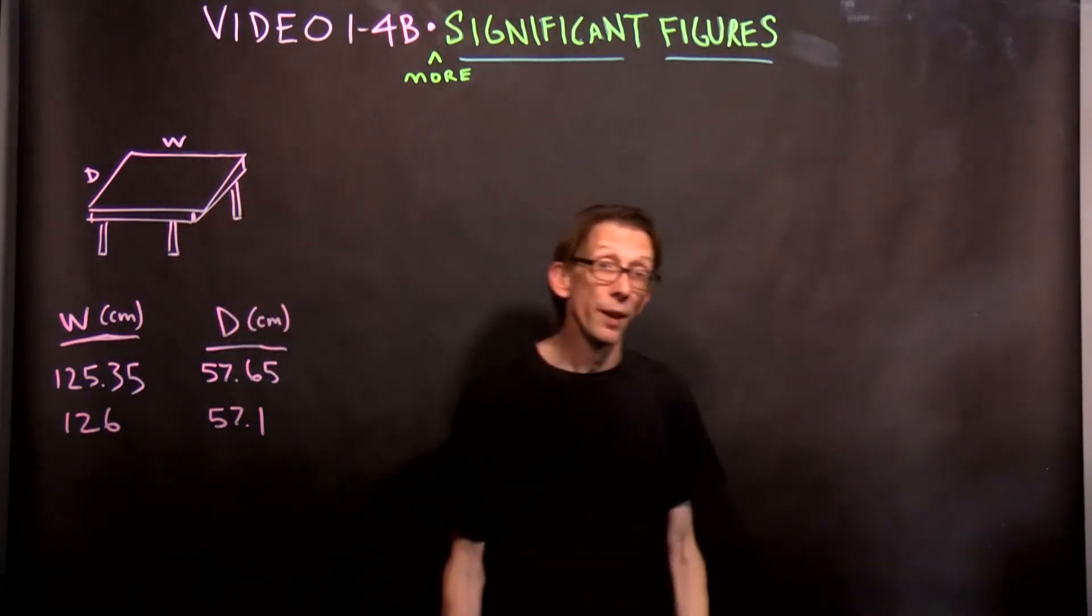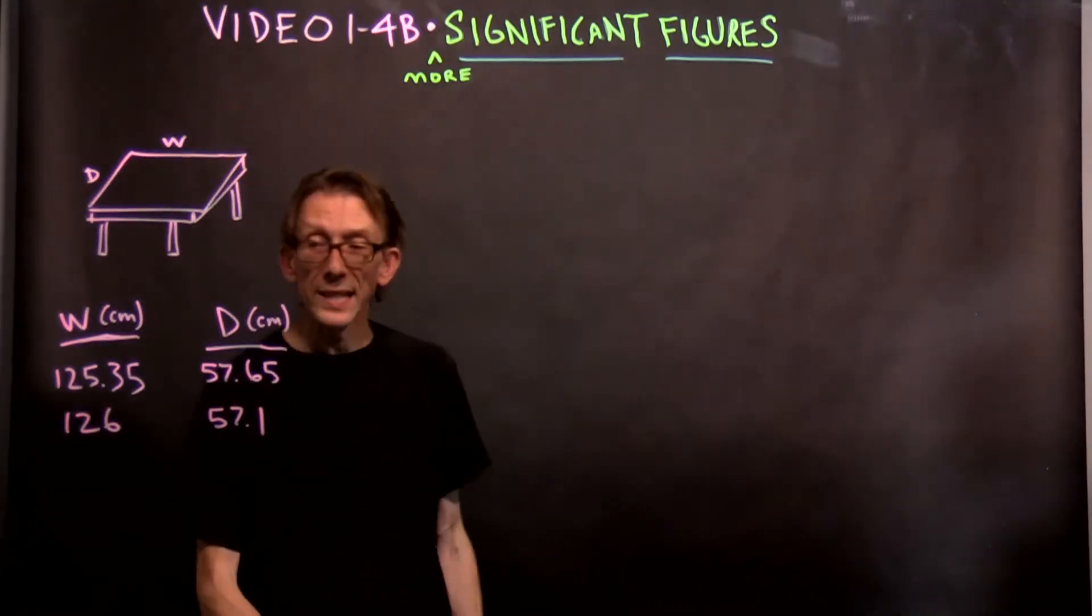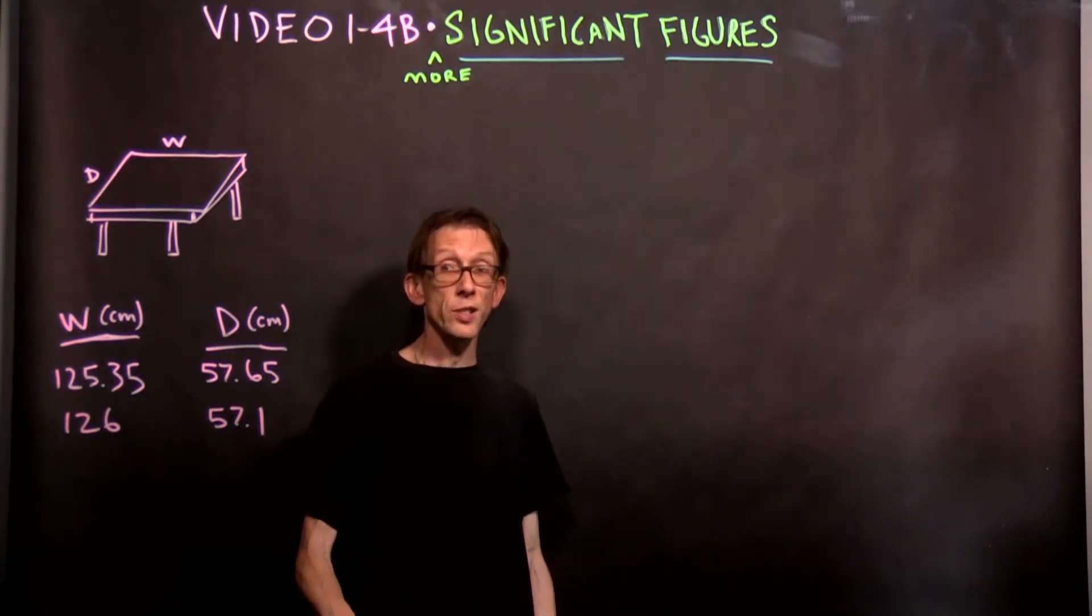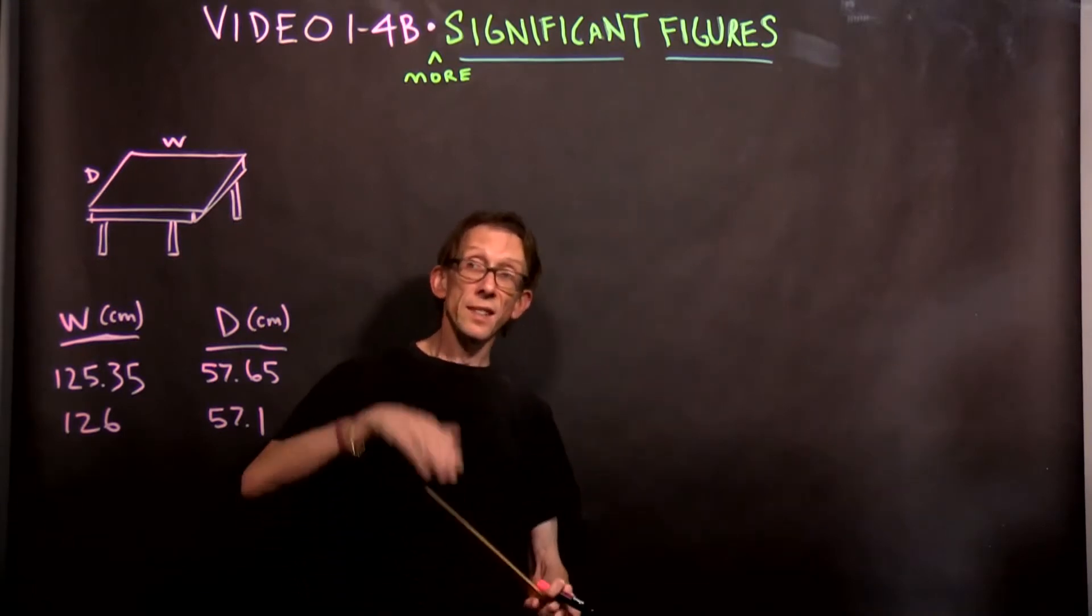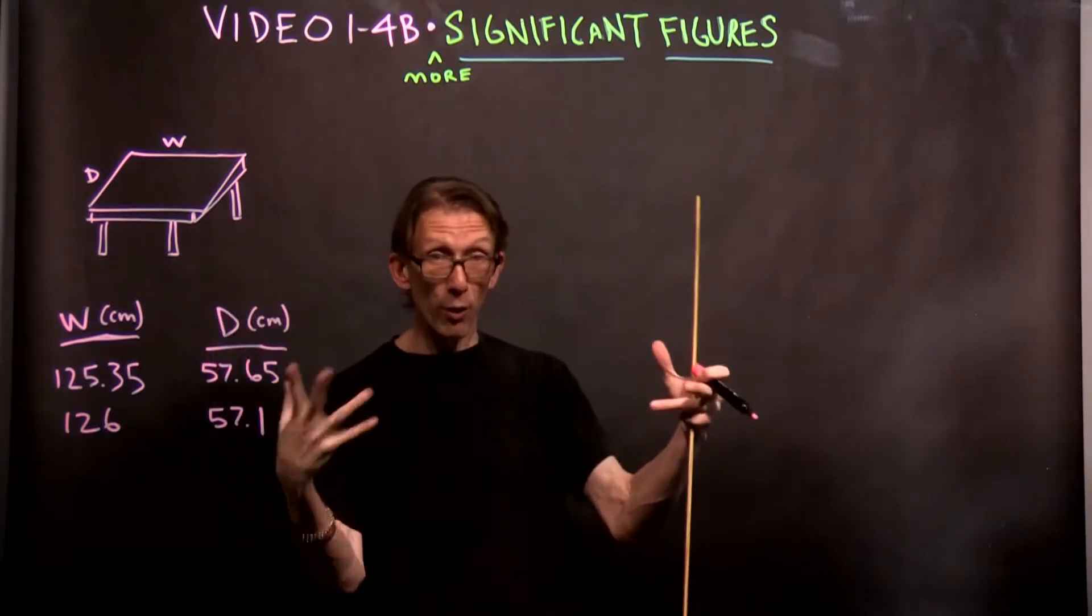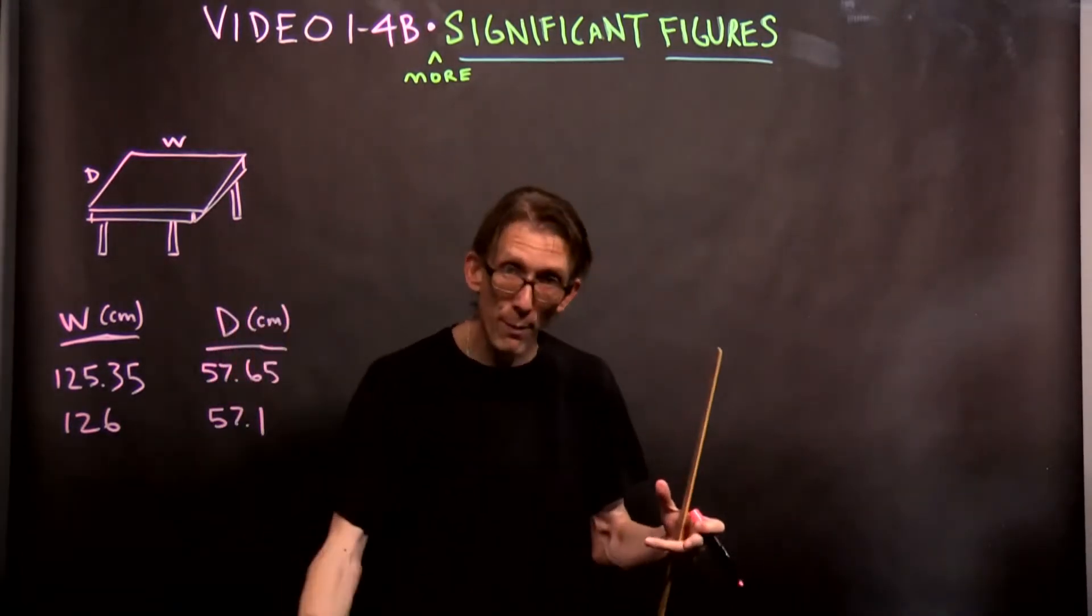Now notice something here. It's different. Student B gives me a slightly different range, a slightly different set of numbers than student A did, using the same meter stick, facing the same table. Now I've actually done this when we're all together in a three-dimensional way. I have actually done this with students and they don't give me the same numbers every time.